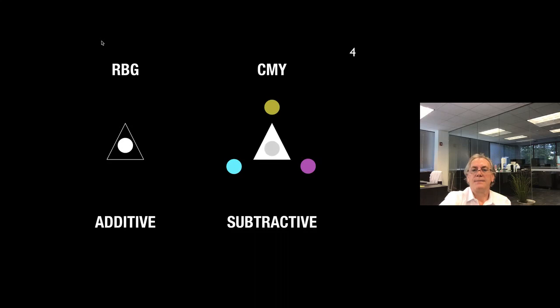The secondary colors are formed by mixing the two primaries together, where we get the orange. Mixing the cyan and the magenta, we'll get the violet or the purple. And mixing the yellow and the cyan, we obtain green.